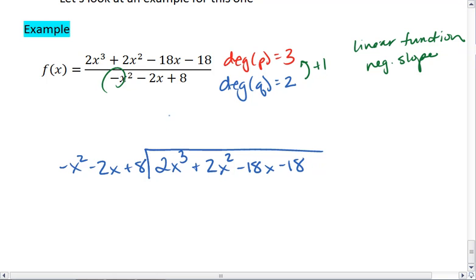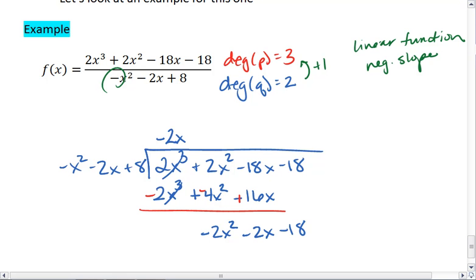We want a negative 2x. Negative 2x times negative x squared becomes positive 2x cubed, and we multiply through. We get 4x squared minus 16x. We subtract, which changes all of our signs, giving us negative 2x squared minus 2x. And then we bring down the negative 18.